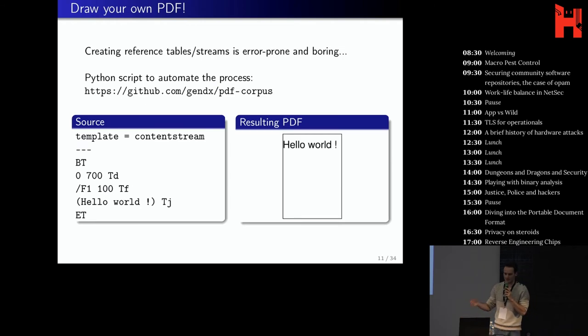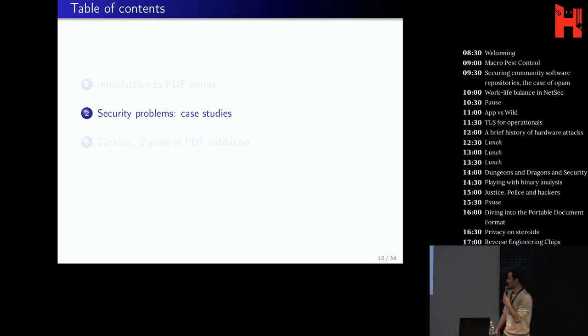As I said, the document contains reference tables and stream and all that. And it's boring to create it yourself. So I made a Python script to automate the process so that you can really write your own Hello World PDF and even more. As you see, with just a few lines of code, you can define a font, move to some coordinates and write some text. So I find it pretty cool and I encourage you to draw your own PDFs. So far, so good.